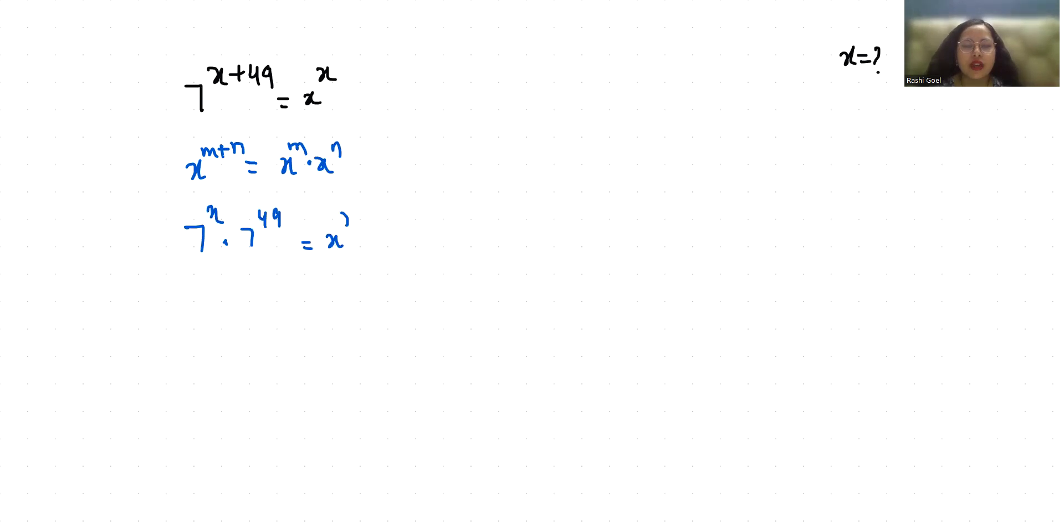Now I am going to divide both sides by 7 power x. So 7 power 49 equals x power x by 7 power x.